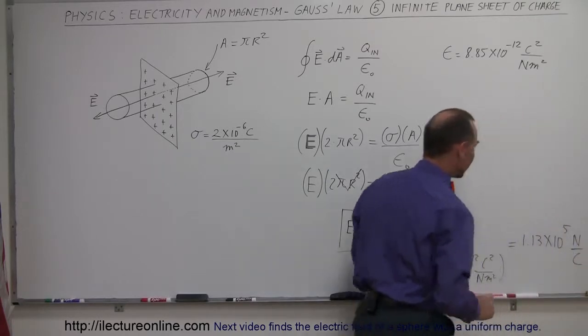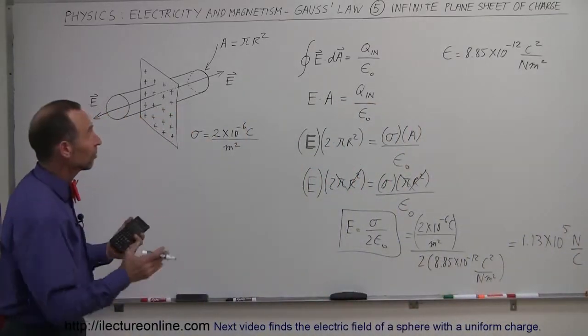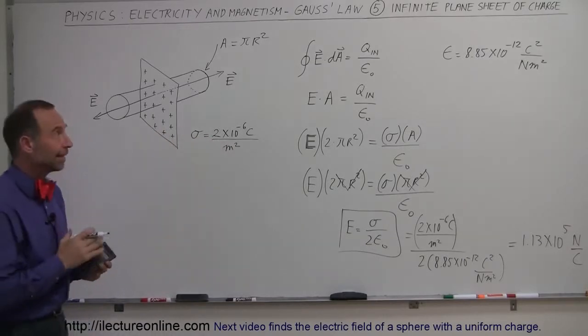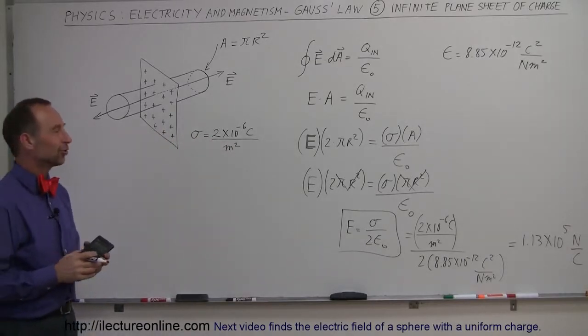And that would be newtons per coulomb, which are the units for the electric field. Now, that's the magnitude of the field. The direction would be perpendicular away from the surface. And that's how we do that for an infinite plane sheet of charge.